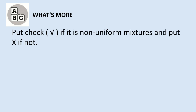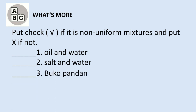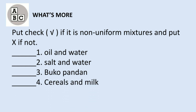What's More. Put a check if it is a non-uniform mixture and an X if it is not. Are you ready? Number one: oil and water. Number two: salt and water. Number three: buko pandan. Number four: cereals and milk. Number five: sago at gulaman.